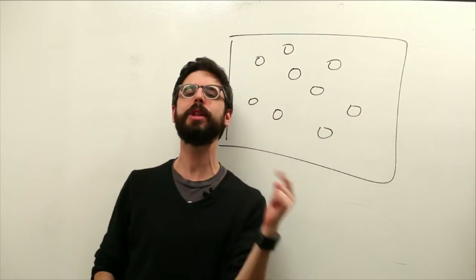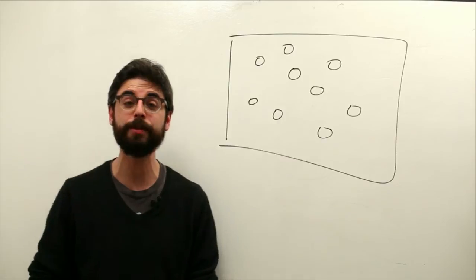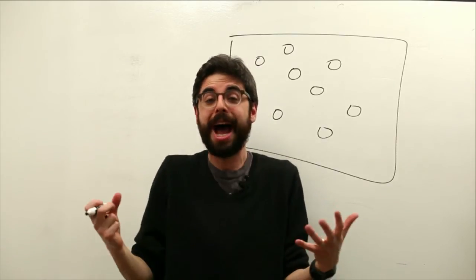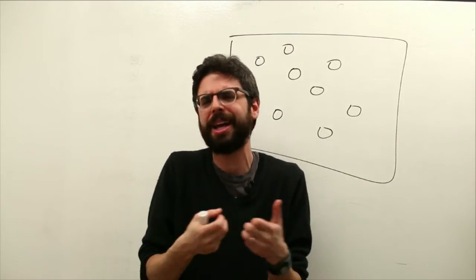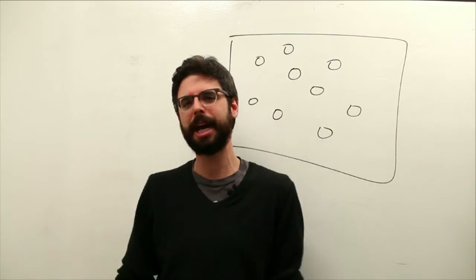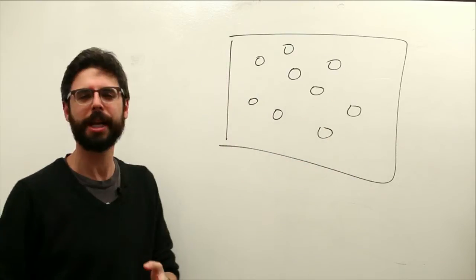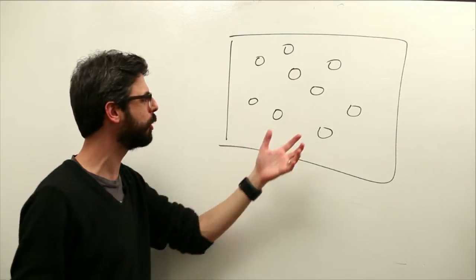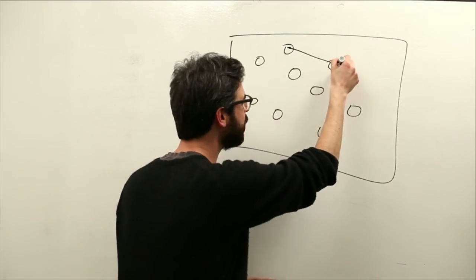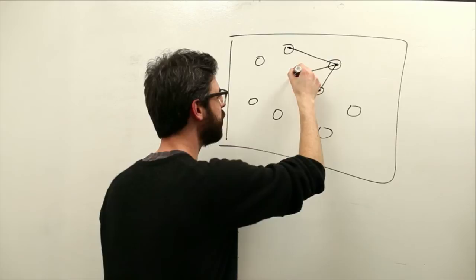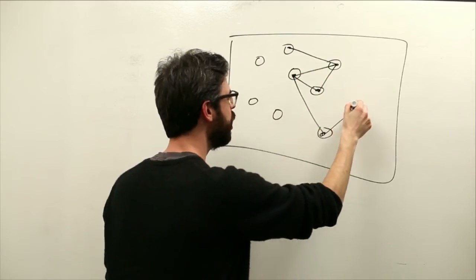What if those things have relationships to other things, and you want them to arrange themselves in some pattern that visualizes the data behind those relationships? A classic example is any social network—friendship connections between people.